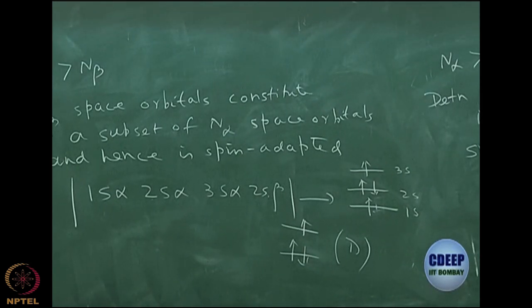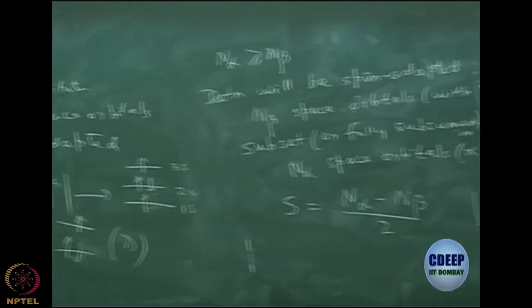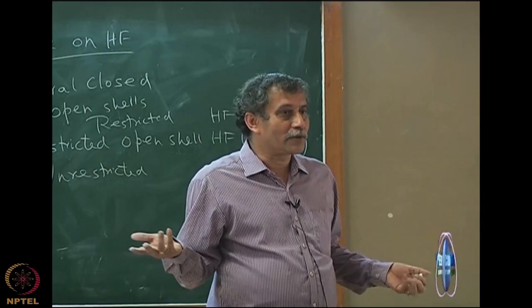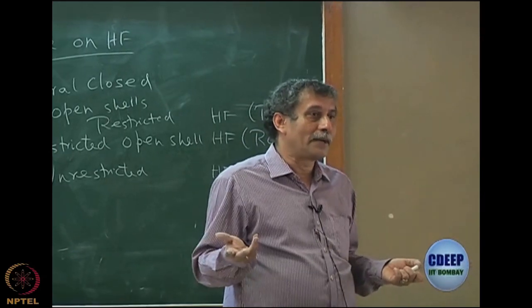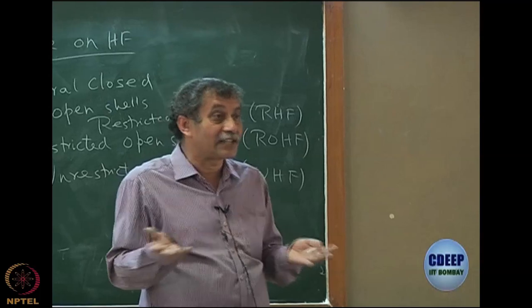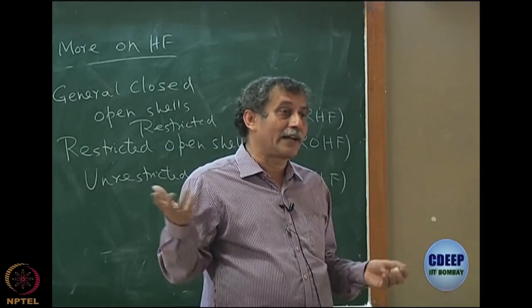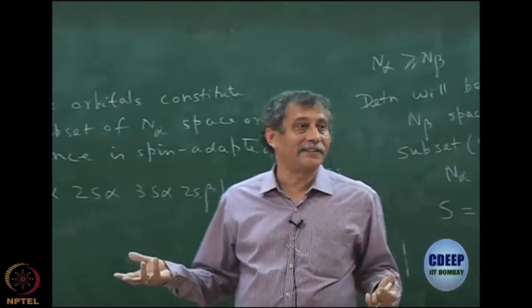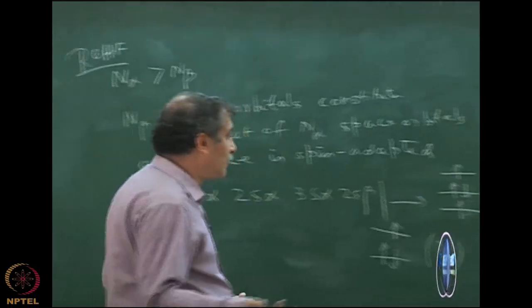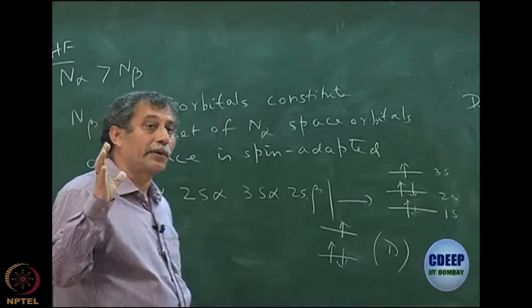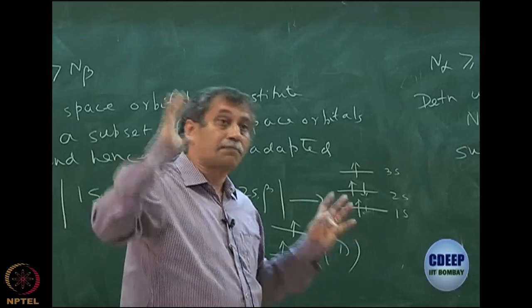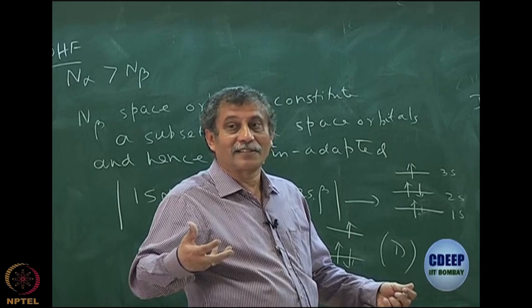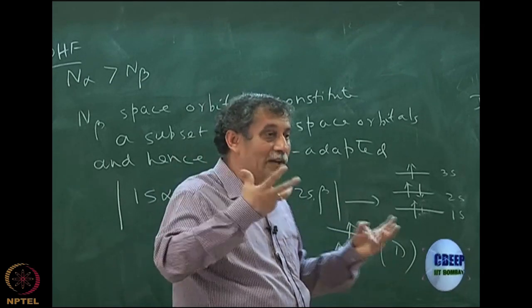Why do we need spin adaptation? Because our Hamiltonian commutes with S-squared — very simple. So our Schrödinger equation solution must also be an eigenfunction of S-squared. Sometimes we cannot enforce it because of approximation — we are not exactly solving. But in doing approximations, if we can enforce it, it is obviously more desirable, just like we like to enforce all symmetry in a problem. Spin is another symmetry, and the actual physical Hamiltonian commutes with S-squared, so all exact wave functions are spin-adapted.